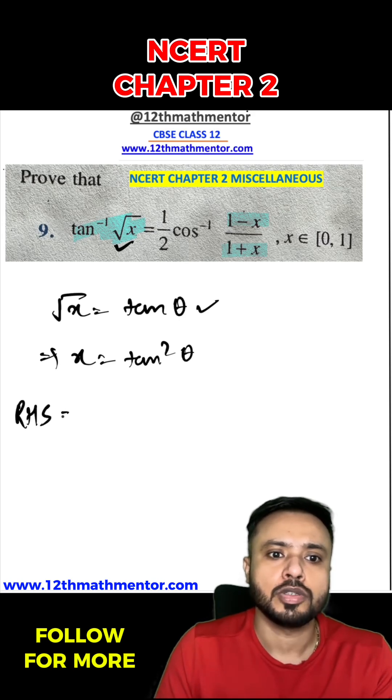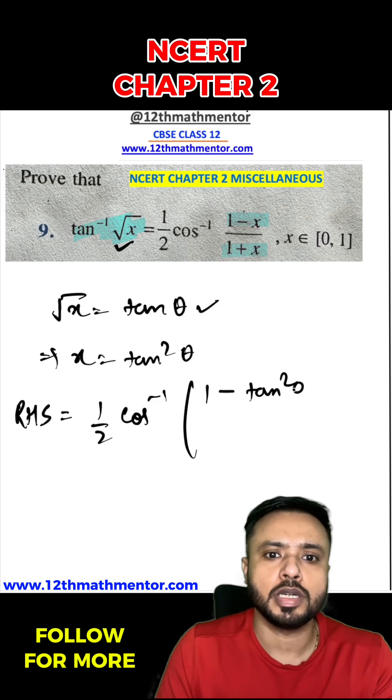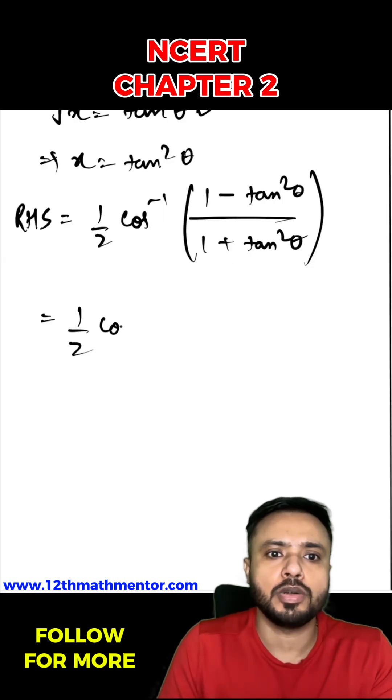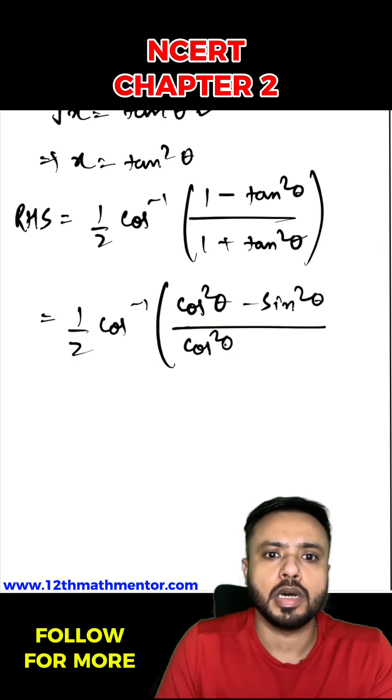Now I will solve the RHS first. RHS will be equal to 1 by 2 cos inverse (1 minus tan square theta) upon (1 plus tan square theta). I can write it as 1 by 2 cos inverse (cos square theta minus sin square theta) upon (cos square theta plus sin square theta).